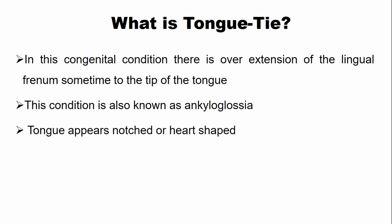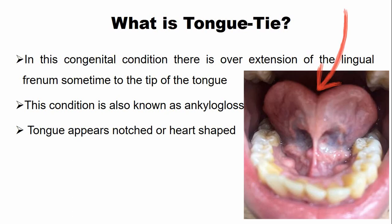In ankyloglossia, or tongue tie, the tongue appears notched or heart-shaped because the tip of the tongue is attached to the floor of the mouth. So the tongue appears heart-shaped or notched.